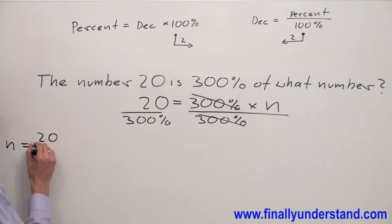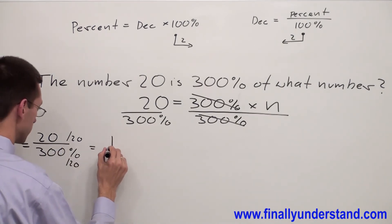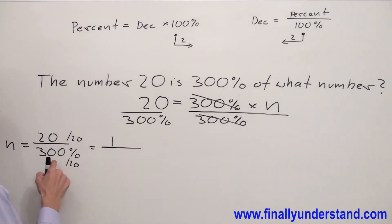Now let's reduce the fraction first. 20 and 300 are both divisible by 20. 20 divided by 20 is 1, and 300 divided by 20 is 15. So I have 1/15%.